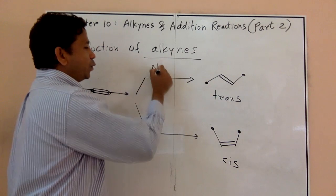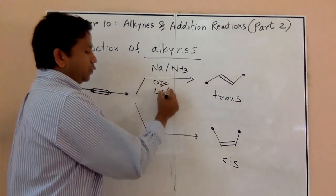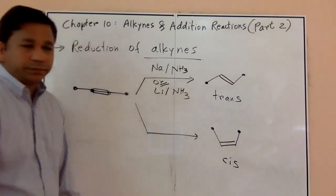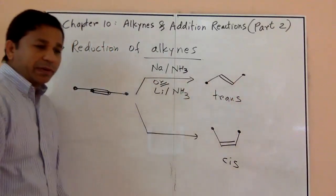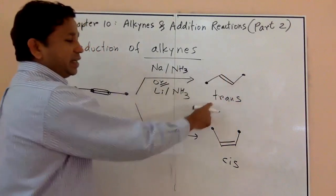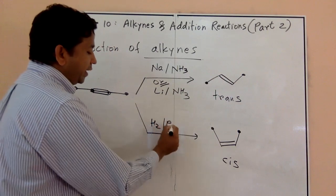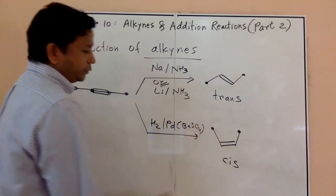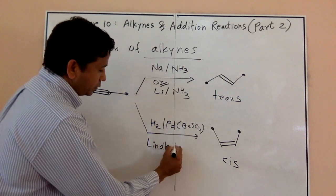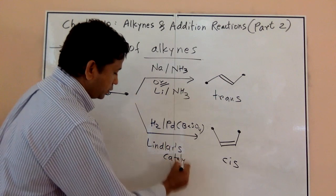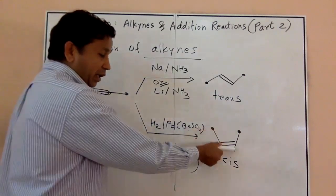If you use sodium or lithium with liquid ammonia (NH3), that gives you a trans double bond. Alternatively, if you use H2 with Pd/BaSO4 — also called the Lindlar catalyst — that will change your triple bond into a double bond, but specifically a cis double bond.